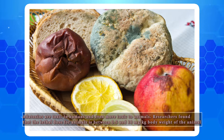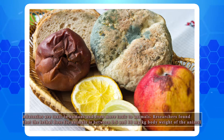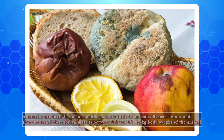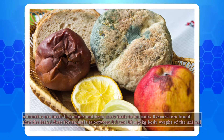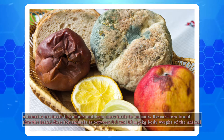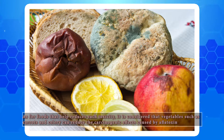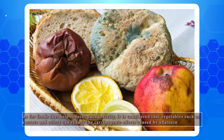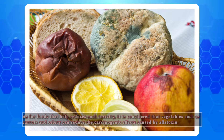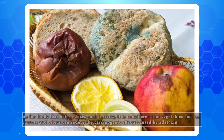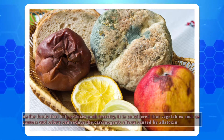Aflatoxins are toxic to humans and even more toxic to animals. Researchers found that the lethal dose for animals is between 0.5 and 10 mg per kg of body weight of the animal. As for foods that help reduce such toxicity, it is considered that vegetables such as carrots and celery can reduce the carcinogenic effects caused by aflatoxin.